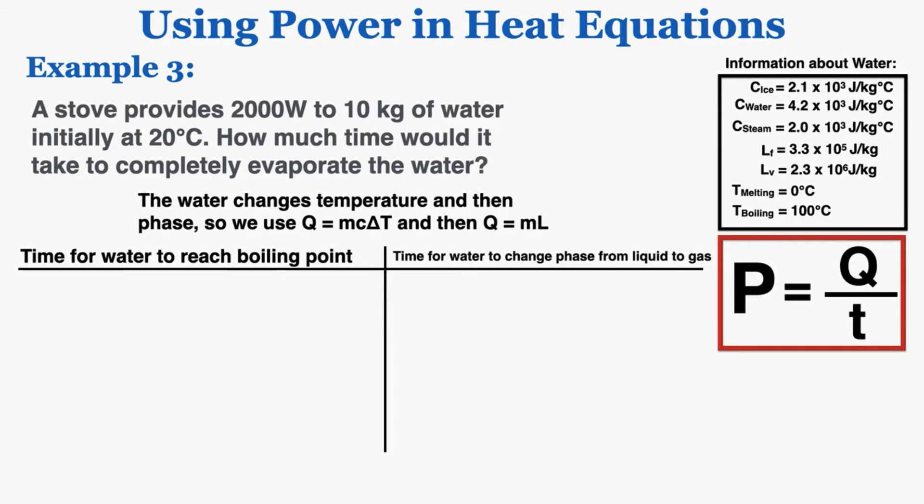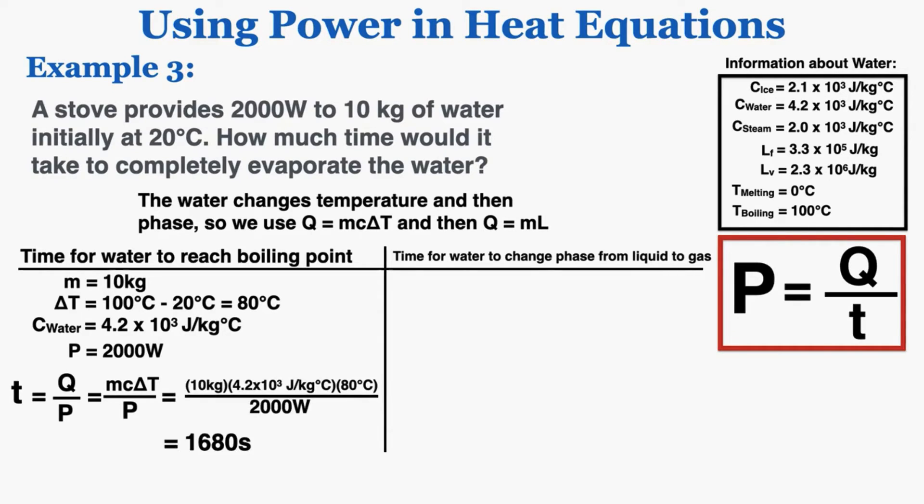I'll start by solving for the time it takes the water to reach its boiling point. The mass is 10 kilograms and we're trying to get it up to 100 degrees Celsius, that's the boiling point of water according to my table on the right, so that means the change in temperature is positive 80 degrees Celsius, and the specific heat of water is 4.2 times 10 to the third joules per kilogram degree Celsius, and the power is 2,000 watts. So plugging this into my equation knowing that Q is equal to MC delta T gets me a time to reach the boiling point of 1680 seconds.